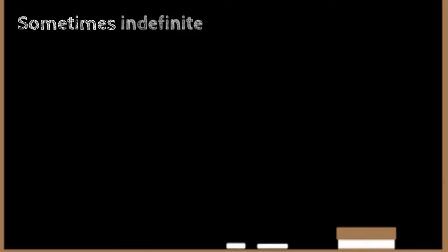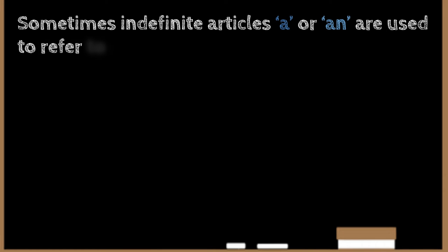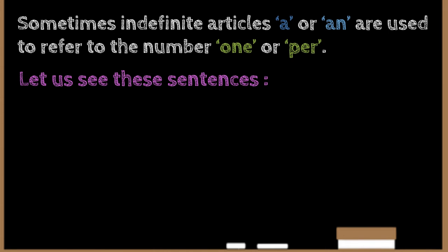Sometimes, indefinite articles a or an are used to refer to the number one or per. Let us see these sentences.